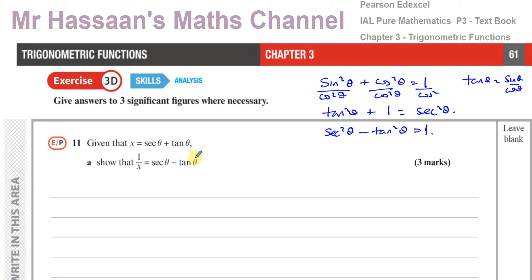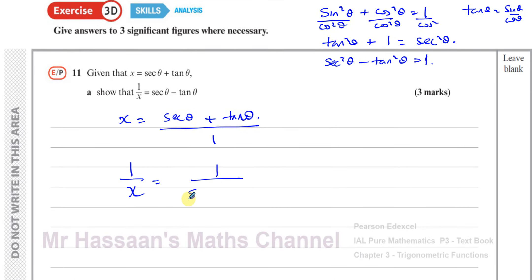Let me take this x, which is secant θ plus tan θ, and write it as its reciprocal, 1 over x. So that's going to be 1 over secant θ plus tan θ. I need to end up with something with secant θ minus tan θ, and this might help me. I know that secant squared θ minus tan squared θ equals 1, so let me replace the 1 with secant squared θ minus tan squared θ. So I have secant squared θ minus tan squared θ over secant θ plus tan θ.